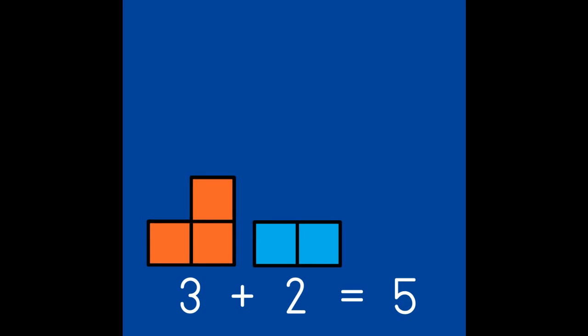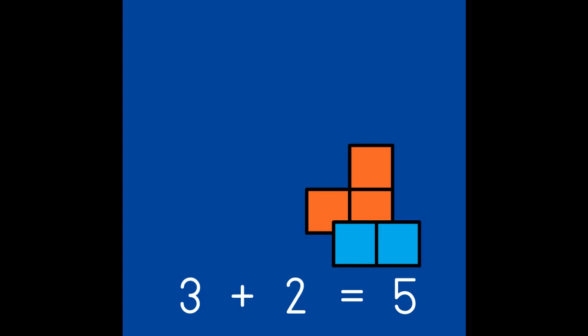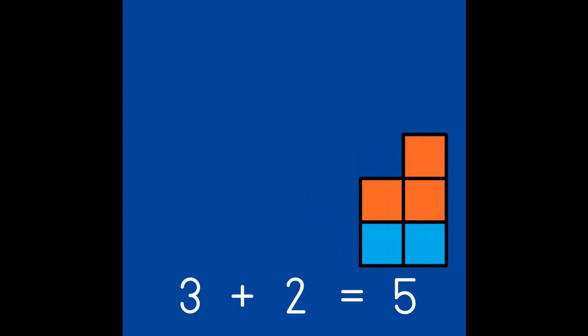Now let's play a missing partner game. I'll show you the first partner and you tell me what partner it needs to make 5. What does 3 need? That's it — 2! 3 and 2 are partners of 5, and we can see the 5 pattern.